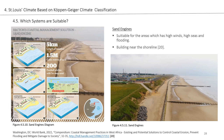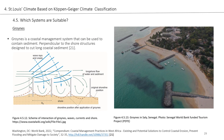Another system is groins, which is a coastal management system used to contain sediments. Groins are placed perpendicular to the shore and are designed to interrupt long-shore sediment transport, as shown in the diagram depicting the scheme of interaction of groins, waves, currents, and shore. On the right-hand side there is an applied example of groins in Senegal, which is very important because it demonstrates that this system is working in Senegal.